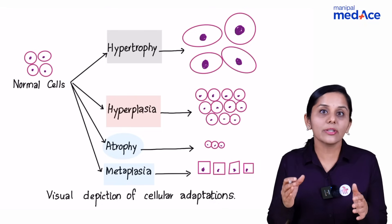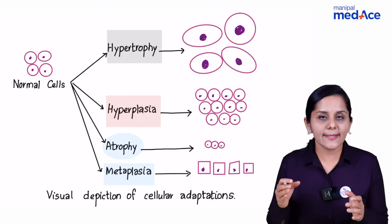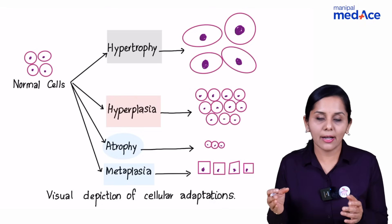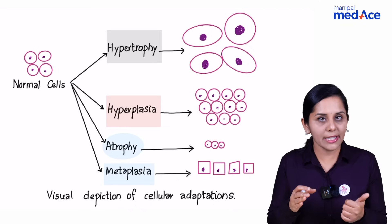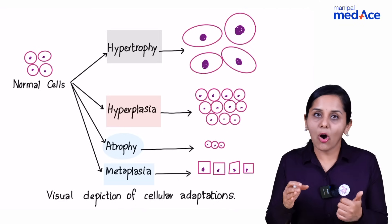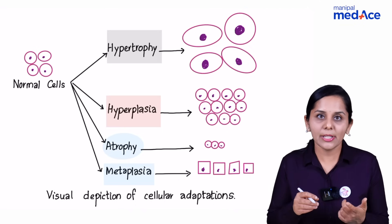If that change is reversible, you call this as metaplasia, and that change can occur in an epithelial cell or it can be in a mesenchymal cell.